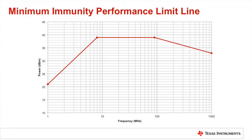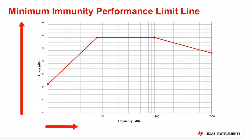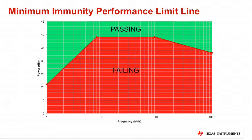By limiting the maximum emissions and requiring a minimum immunity performance of an ECU, it is possible to guarantee interoperability. The requirements document from the German OEMs have the following immunity requirement for all CAN transceivers. The units on the y-axis are dBm, which is a power measurement on a log scale, and the x-axis is frequency and covers the 1 MHz to 1 GHz range. To be passing, the transceiver's performance must be at or above the red limit line.